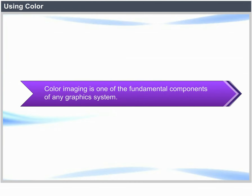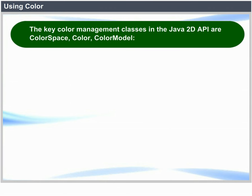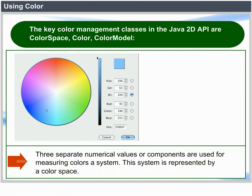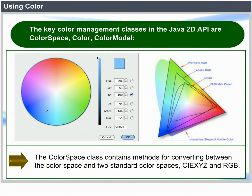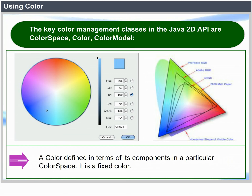Using color: Color imaging is one of the fundamental components of any graphics system. The key color management classes in the Java 2D API are ColorSpace, Color, and ColorModel. Three separate numerical values or components are used for measuring colors in a system, represented by a color space. The ColorSpace class contains methods for converting between the color space and two standard color spaces — CIEXYZ and sRGB. A color defined in terms of its components in a particular color space is a fixed color.